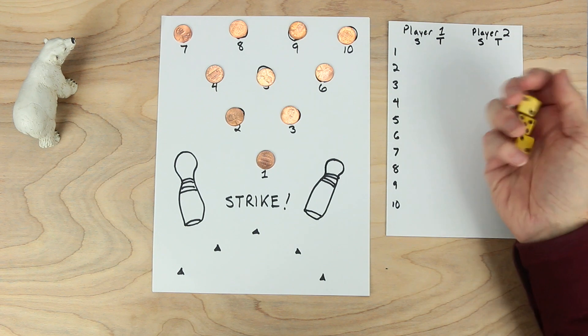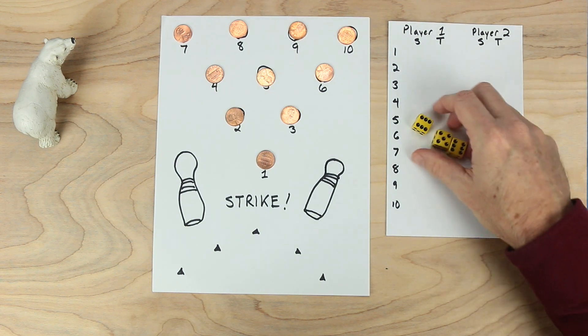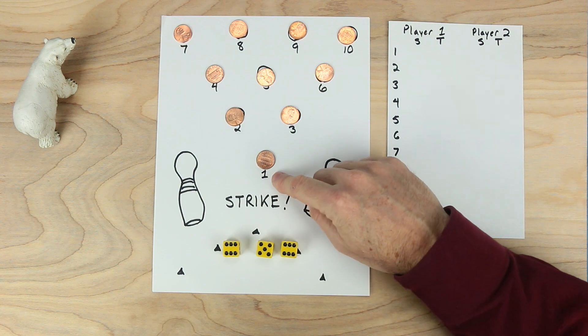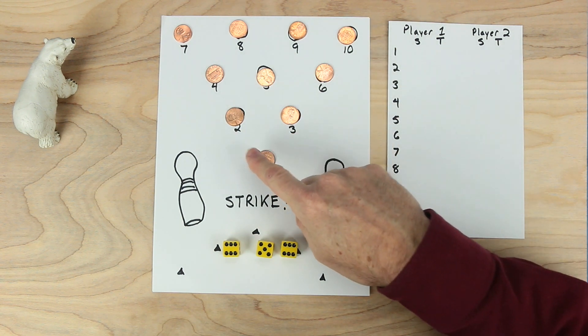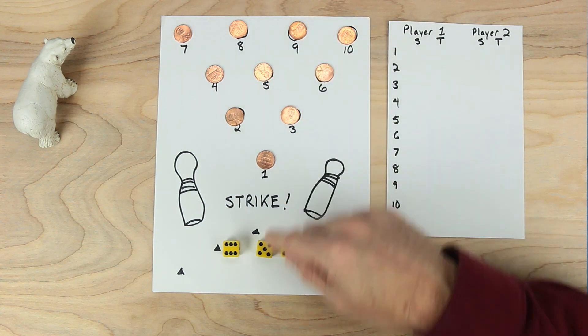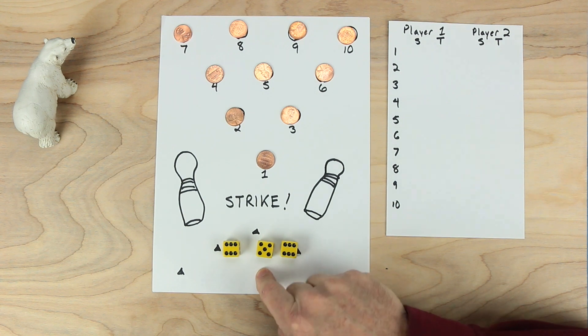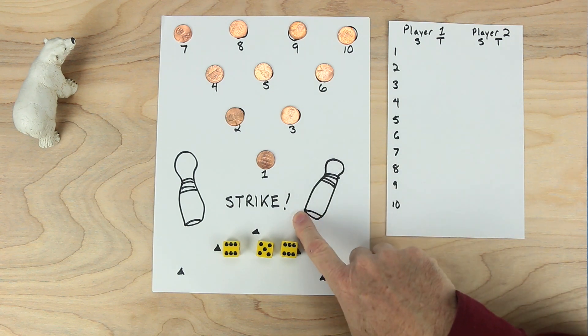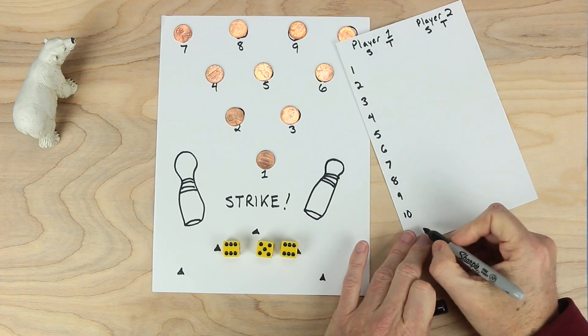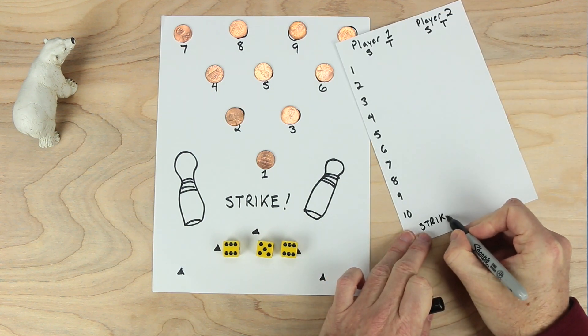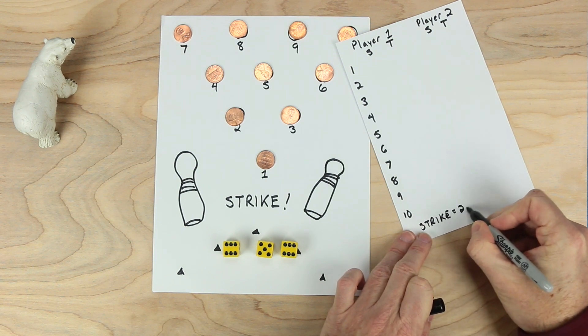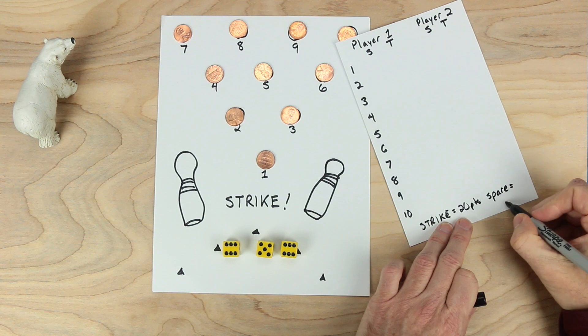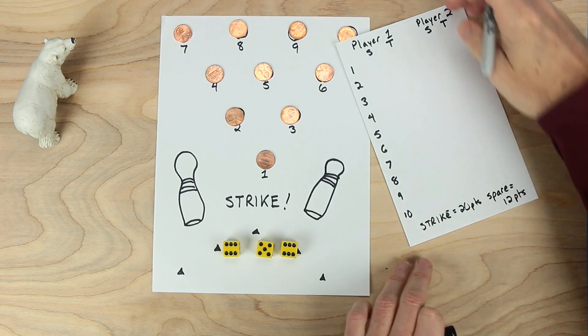I'm going to go over the rules for the game now. Player one's going to roll and use these dice to try to make each one of these numbers, one through ten, by adding, subtracting, multiplying, or dividing. If a player is able to make all of the numbers one through ten, that's a strike, and the strike bonus is equal to 20 points. And then there's also something called a spare, which is worth 12 points.